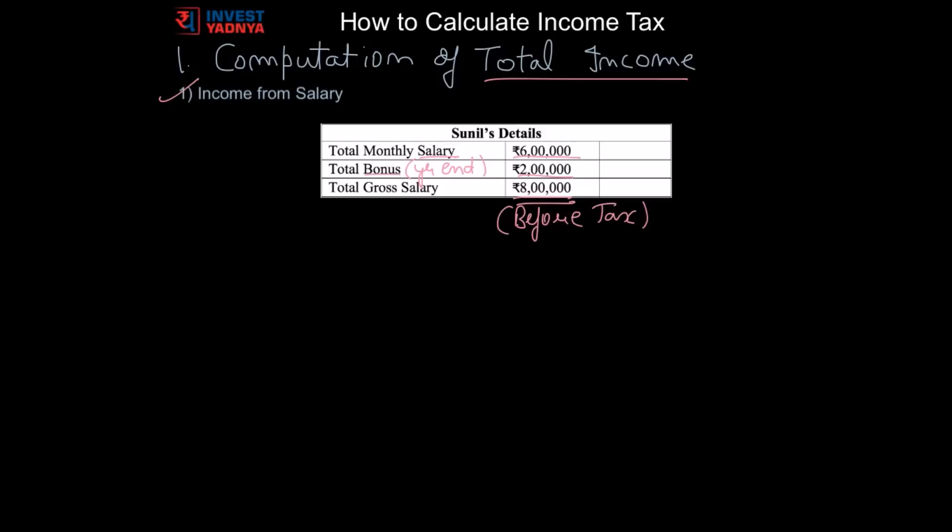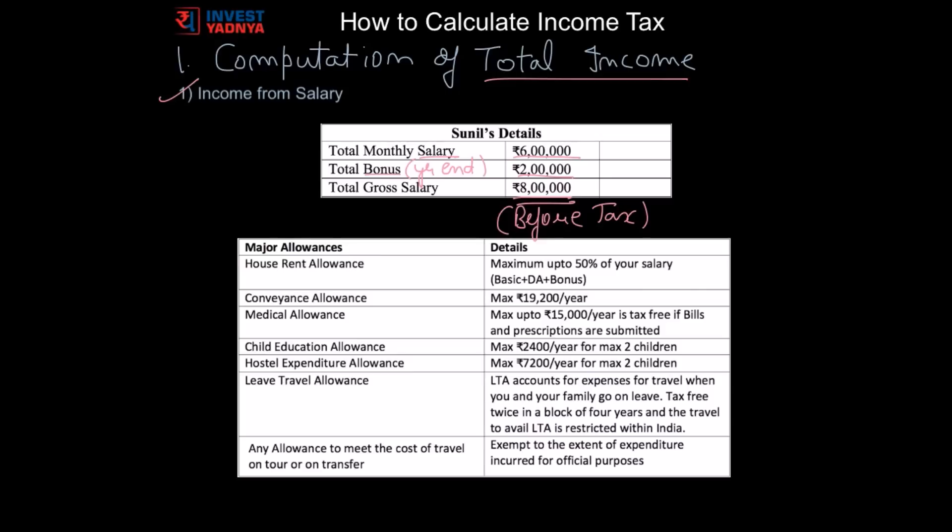Now there are many allowances which gives tax exemptions. Here is the list of major ones: house rent allowance on the rent you pay, maximum up to 50% of your salary; conveyance allowance for your travel to work, maximum up to rupees 19,200 per year; medical allowance on your medical related expenses if you submit the bills, maximum up to rupees 15,000 per year. Similarly these are others.